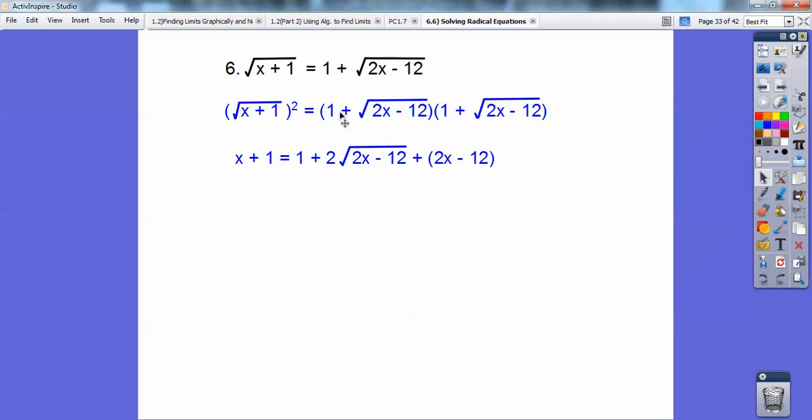So when I do first times first, I get 1 times 1, outer times outer, I get a 1 times the radical, inner times inner, I get another 1 times the radical, so I have 2 times the radicals. Finally, last times last makes the radical disappear because they're the same right there, so there's my 2x minus 2. Now I'm going to combine like terms with this 1 right here and this minus 12 to get me a minus 11, just clean it up just a little bit.